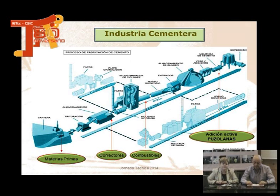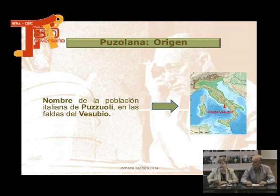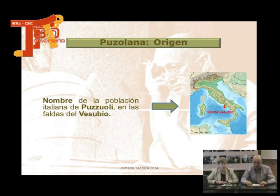Esos materiales que se meten al final se denominan puzolanas. Os voy a contar de dónde viene la palabra puzolana, que es curioso. Ya sabéis que en Italia hay un volcán que se llama el Vesubio. Y cerca del Vesubio hay una localidad que se llama Pozzuoli. Y de ahí viene la palabra puzolana.